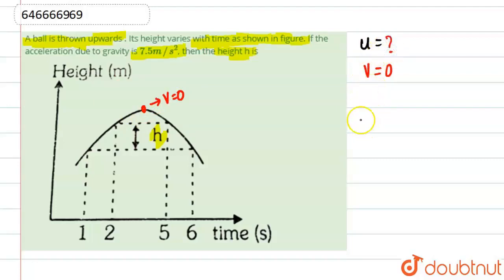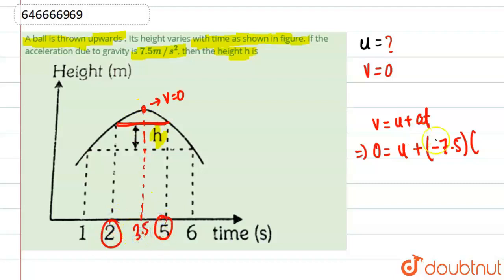So what we'll use, we will use the first equation of motion, which is v is equal to u plus at. So v will be equal to zero. u will be equal to u plus a will be equal to minus 7.5 because it is gravity, and time will be equal to... since you can see over here, both points are at same level. That means the h max will be the midpoint of these two, and the midpoint is basically 3.5.